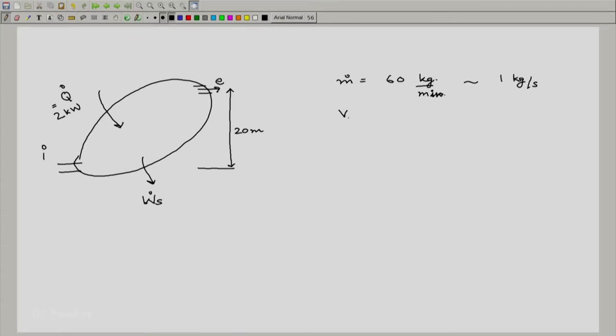V i, it is mentioned is negligible. So we will just put this as equal to 0. V e is equal to 2200 meters per minute.